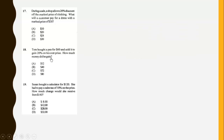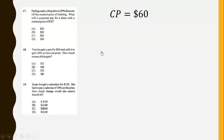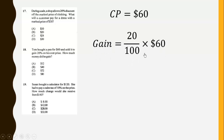Tom bought a pen for $60 and sold it to gain 20% on his cost price. How much money did he gain? The cost price is $60 and the gain is 20% of $60, which gives us $12, so he gained $12.